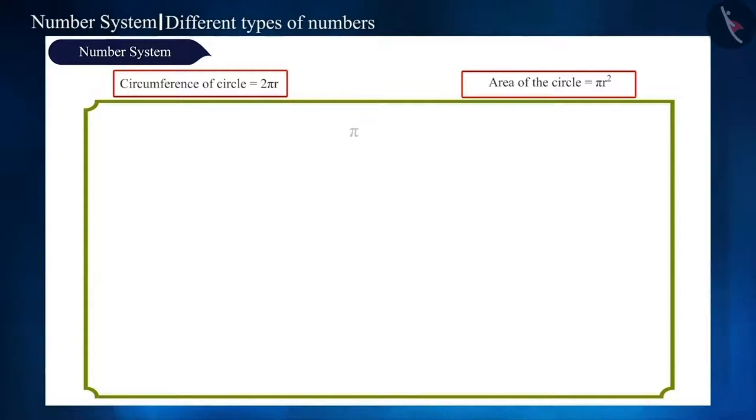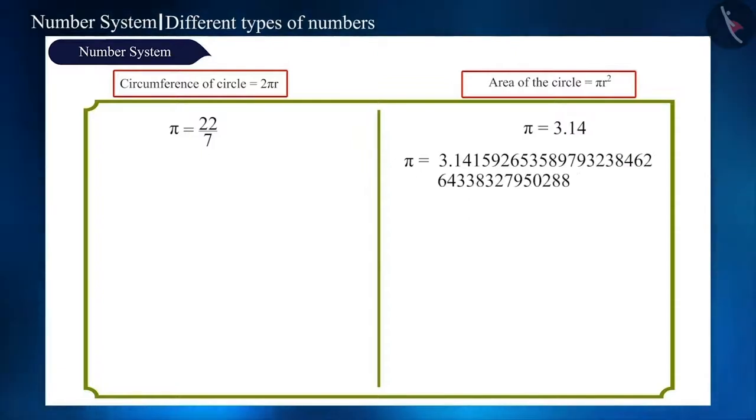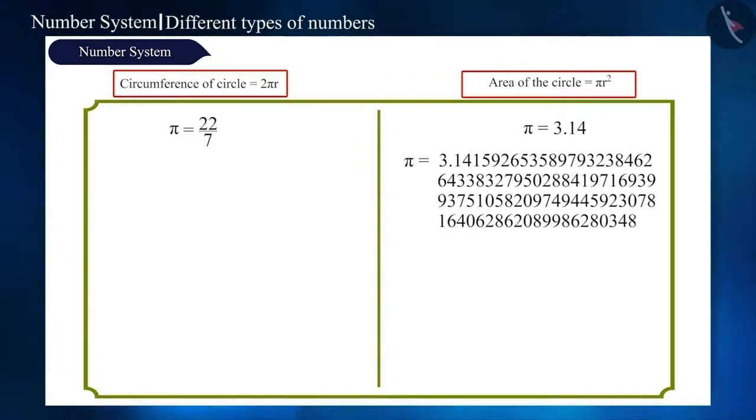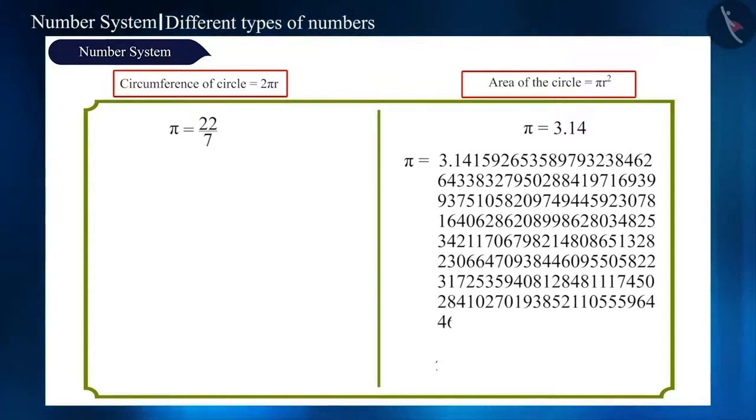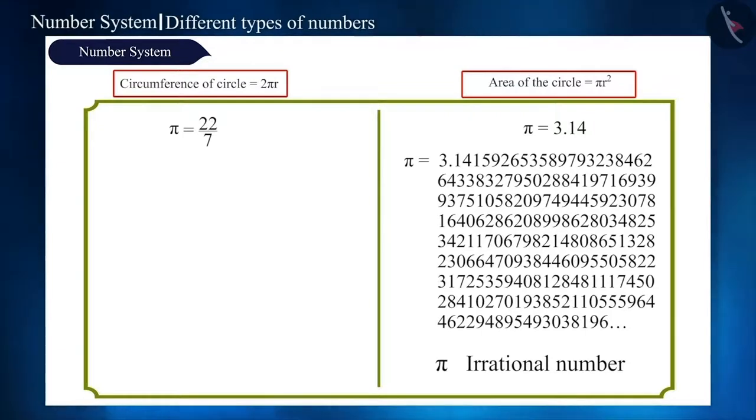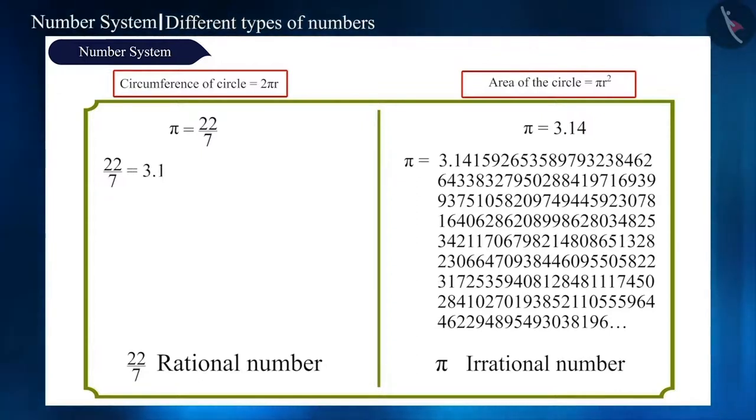Pi is sometimes given as 22 by 7 or sometimes 3.14. The value of pi is 3.141592653 and so on, in which the digits after the decimal are not repeated or nor do they end. Or, you can say pi is an irrational number while 22 by 7 is a rational number. The decimal form of 22 by 7 is 3.142857142857.